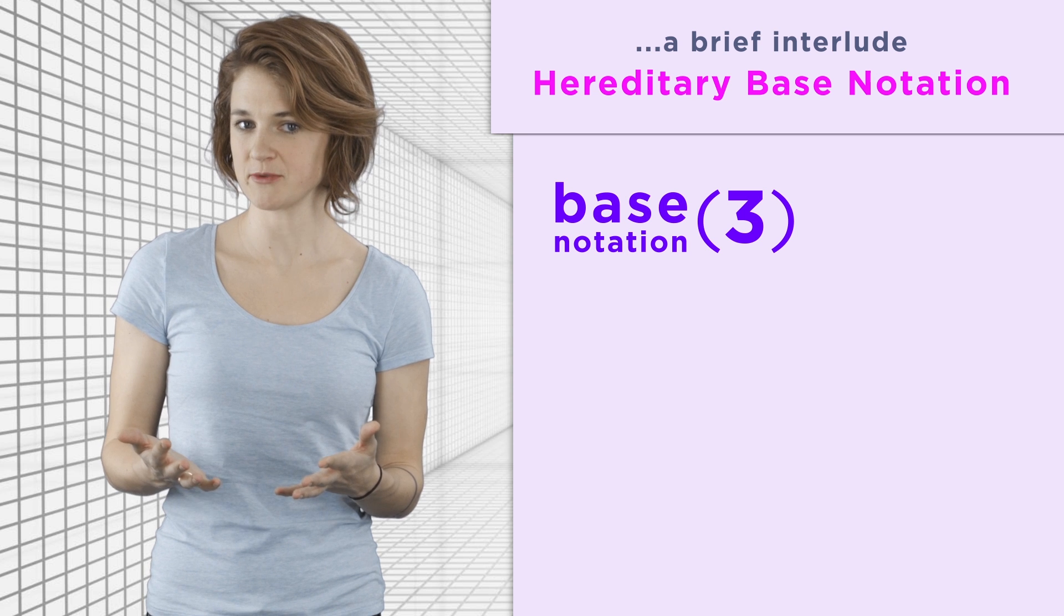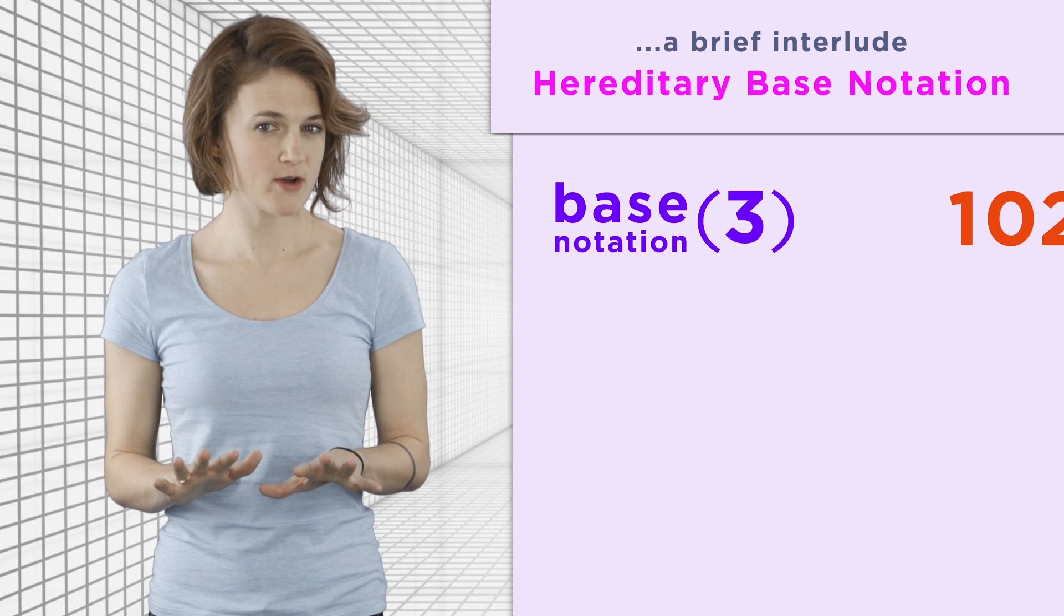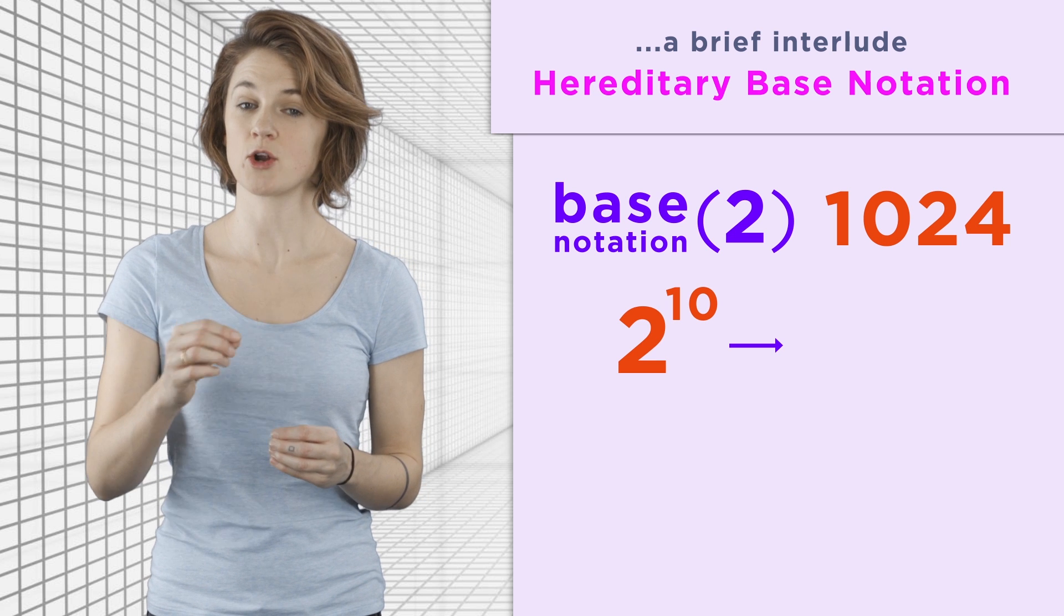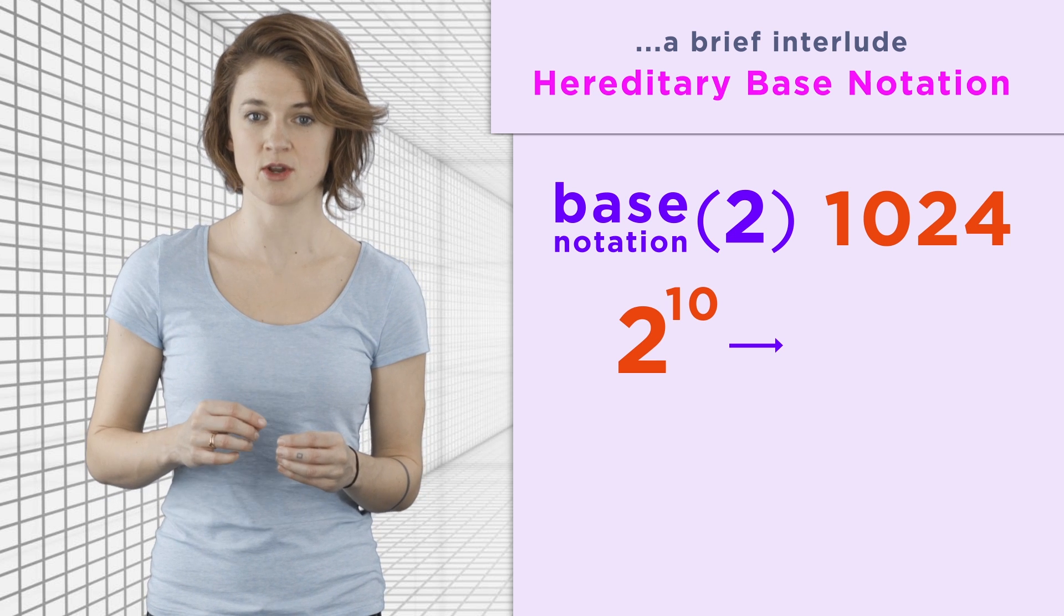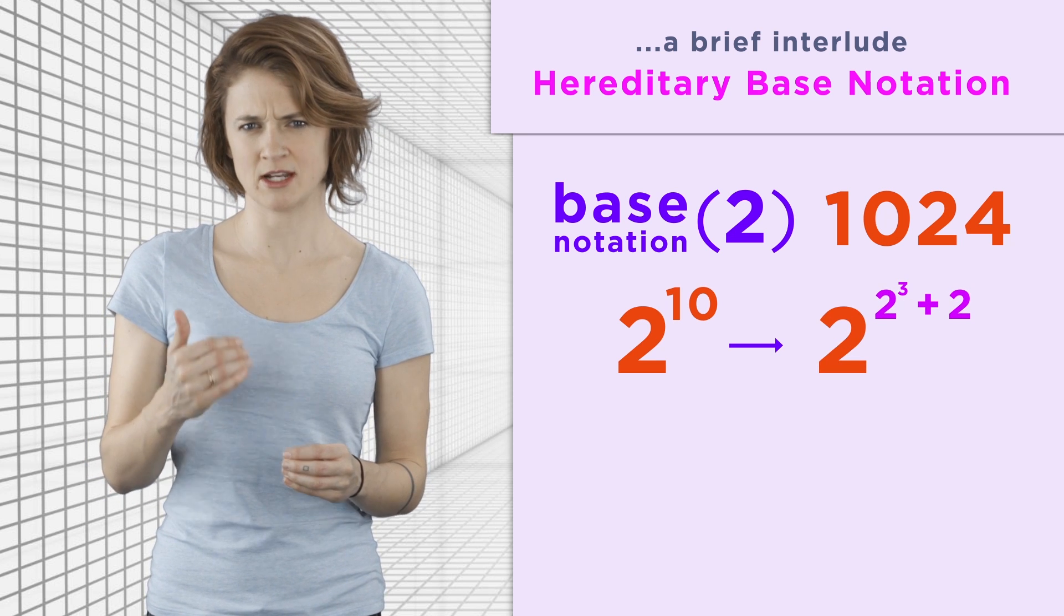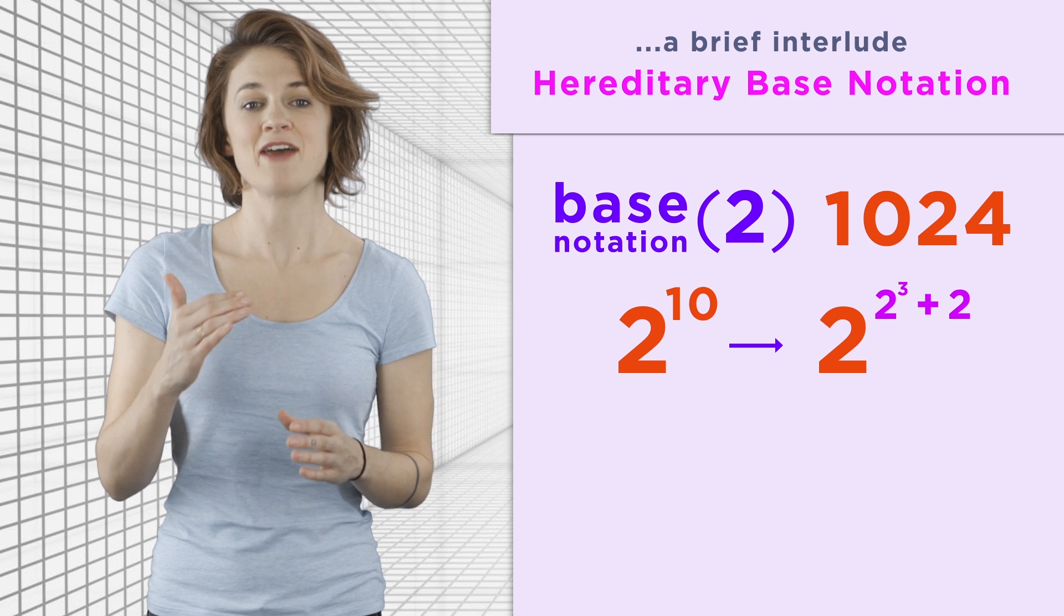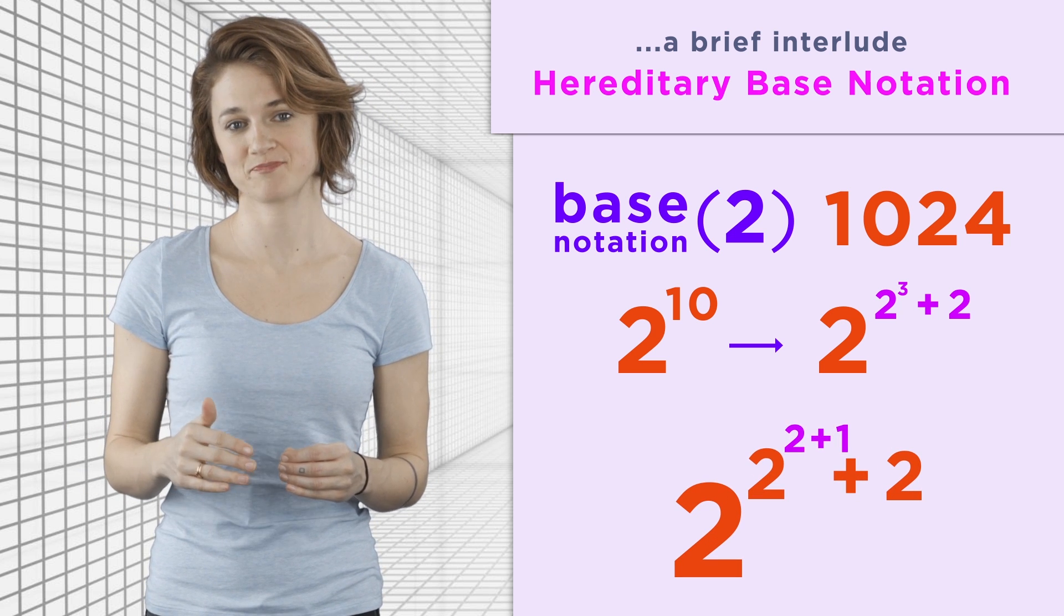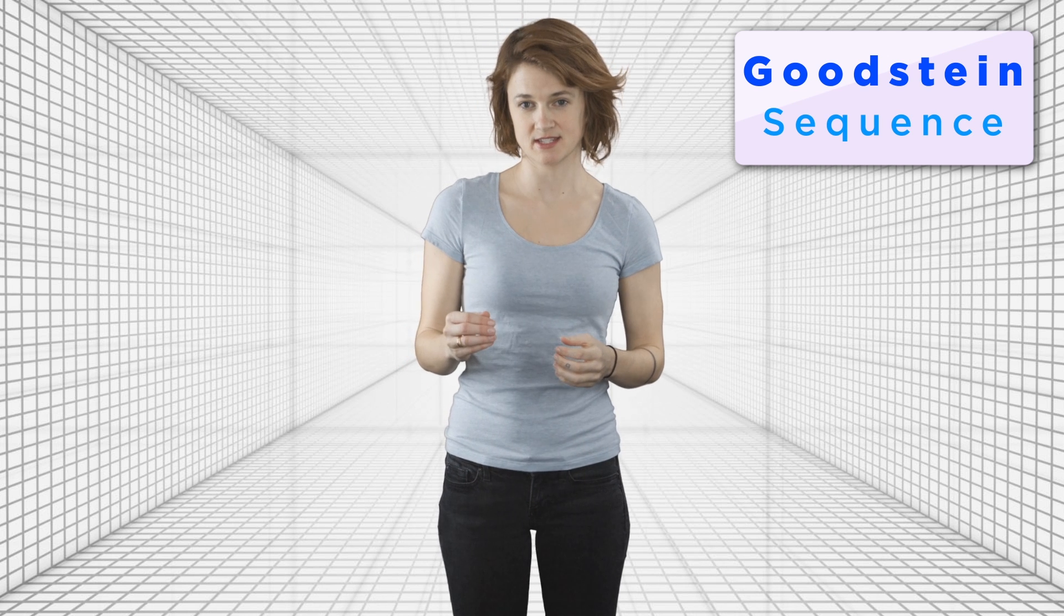Just to see one more example, it's easy to write 1024 in base 2 notation. But to write it in hereditary base 2 notation, we have to rewrite the exponent in base 2 notation, and then write the exponent of the exponent in base 2 notation. OK. Back to Goodstein's sequences.